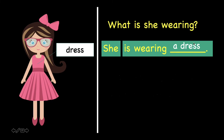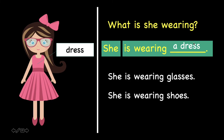Besides this, we can also say, "She is wearing glasses," or "She is wearing shoes." Once again, we do not put "a" in front of glasses and shoes, because they refer to more than one thing.